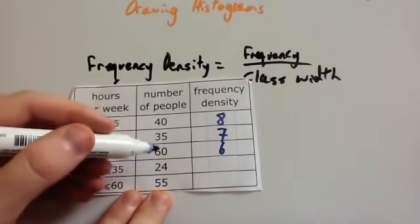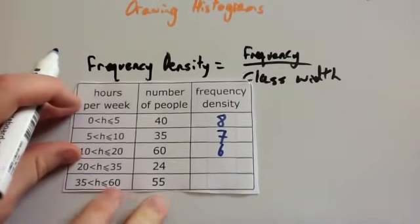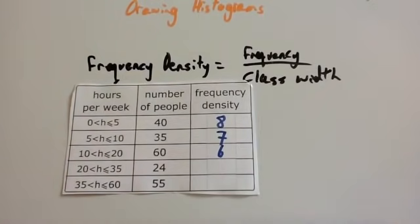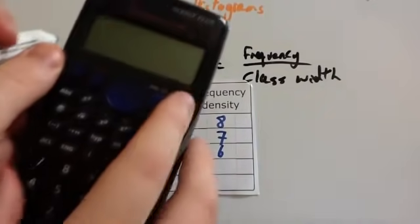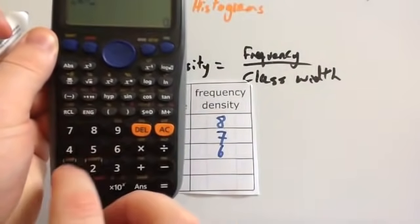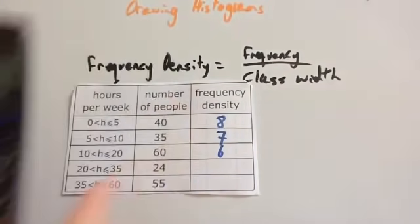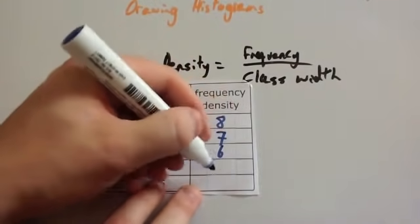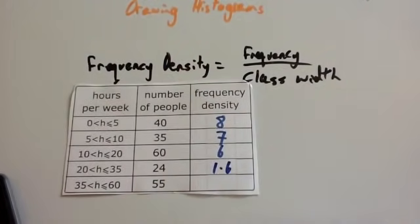The next one. We've got 24 is the frequency. The class width is 15. So we get your calculator. And you're going to do 24 divided by 15 to get 1.6. So the frequency density for this one is 1.6.